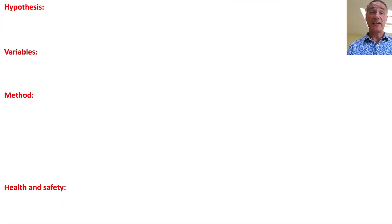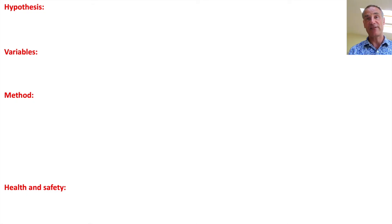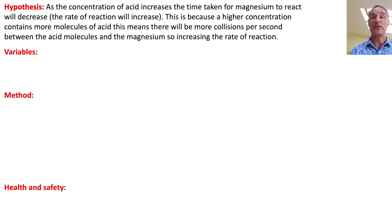This is how I'd set out the answer, with sections for hypothesis, variables, method, and safety. For the 12 marks, you don't have to hit every single point — it means you've done reasonably well across all the different areas. My hypothesis would be: as the concentration of acid increases, the time taken for the magnesium to react will decrease, so the rate of reaction will increase. The science: a higher concentration contains more molecules of acid, meaning there will be more collisions per second between the acid molecules and the magnesium, increasing the rate of reaction.